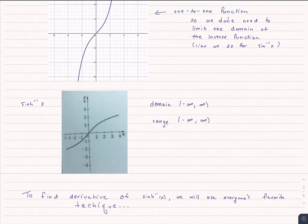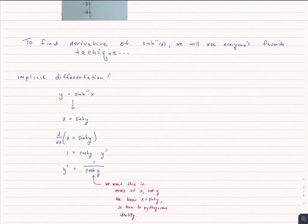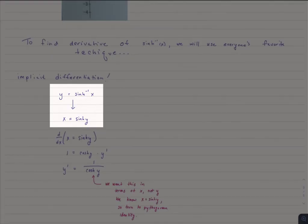Now what? Yeah, we're going to find the derivative of hyperbolic sine. But unfortunately, this is going to involve everybody's favorite technique, which is implicit differentiation. Let's jump in. So we have y equals the inverse of hyperbolic cosine x.